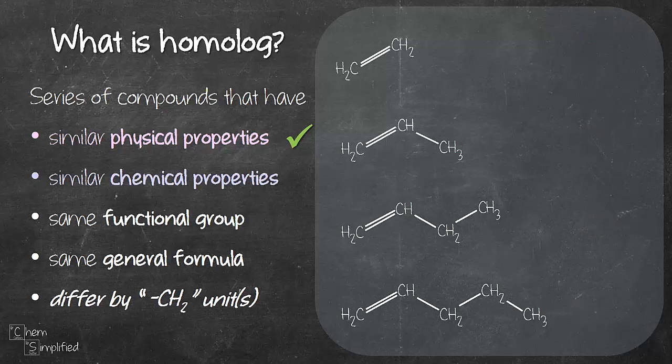Next point is similar chemical properties. This group of compounds that are in homologous series, they tend to behave the same chemically when they go through a certain reaction. For example, if they were to react with bromine solution, all these compounds will decolorize bromine solution. So they have similar chemical properties.